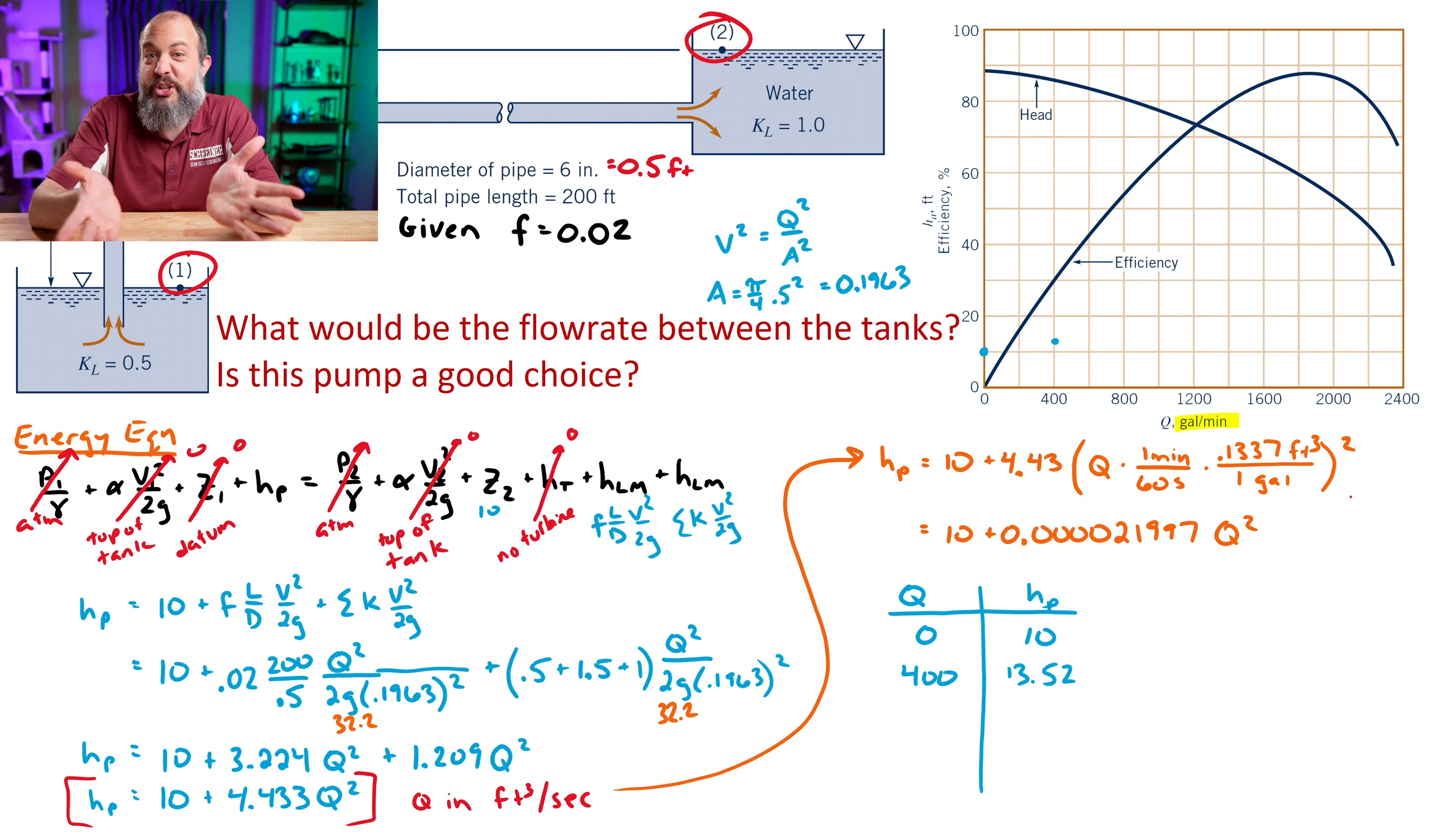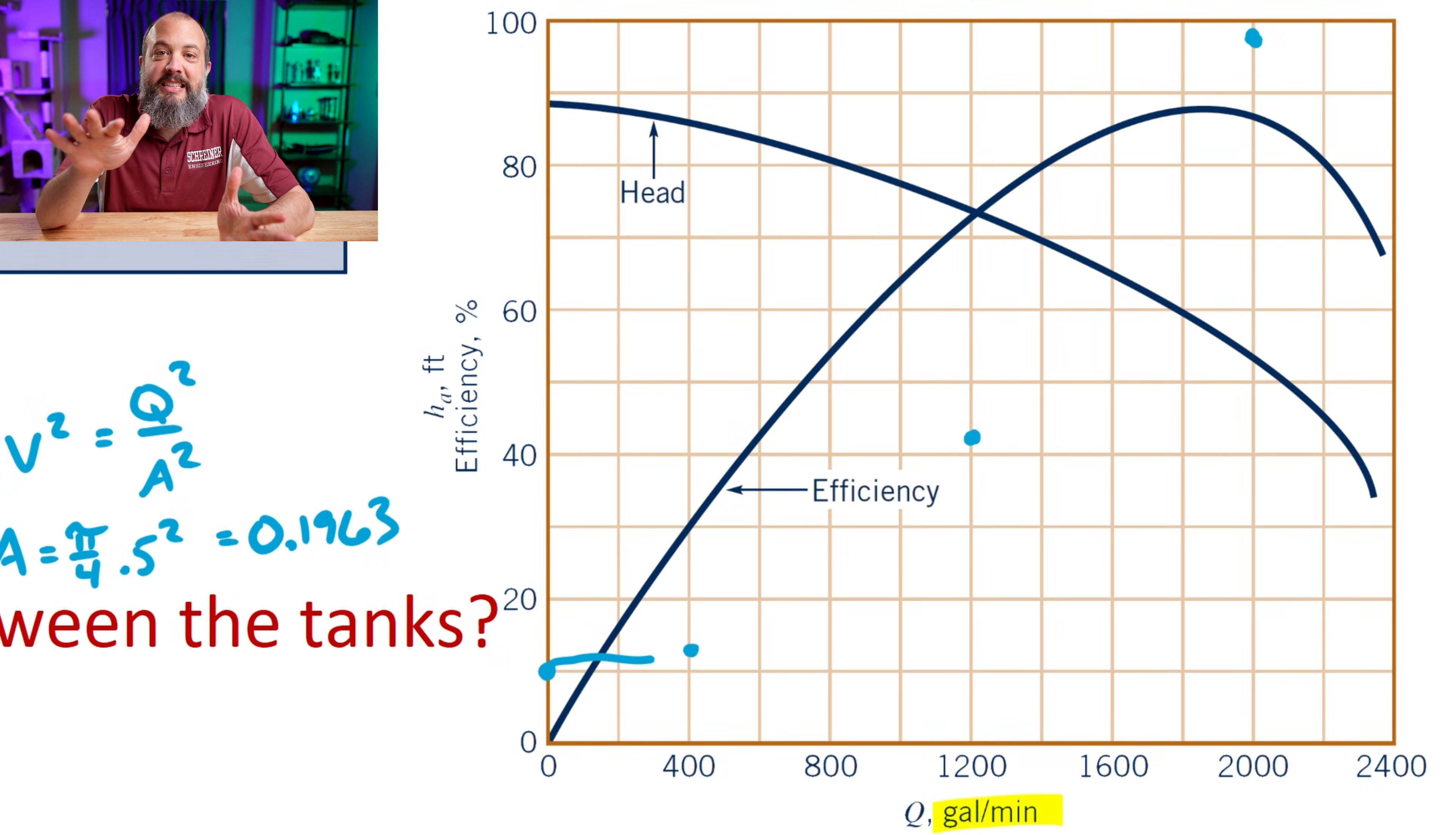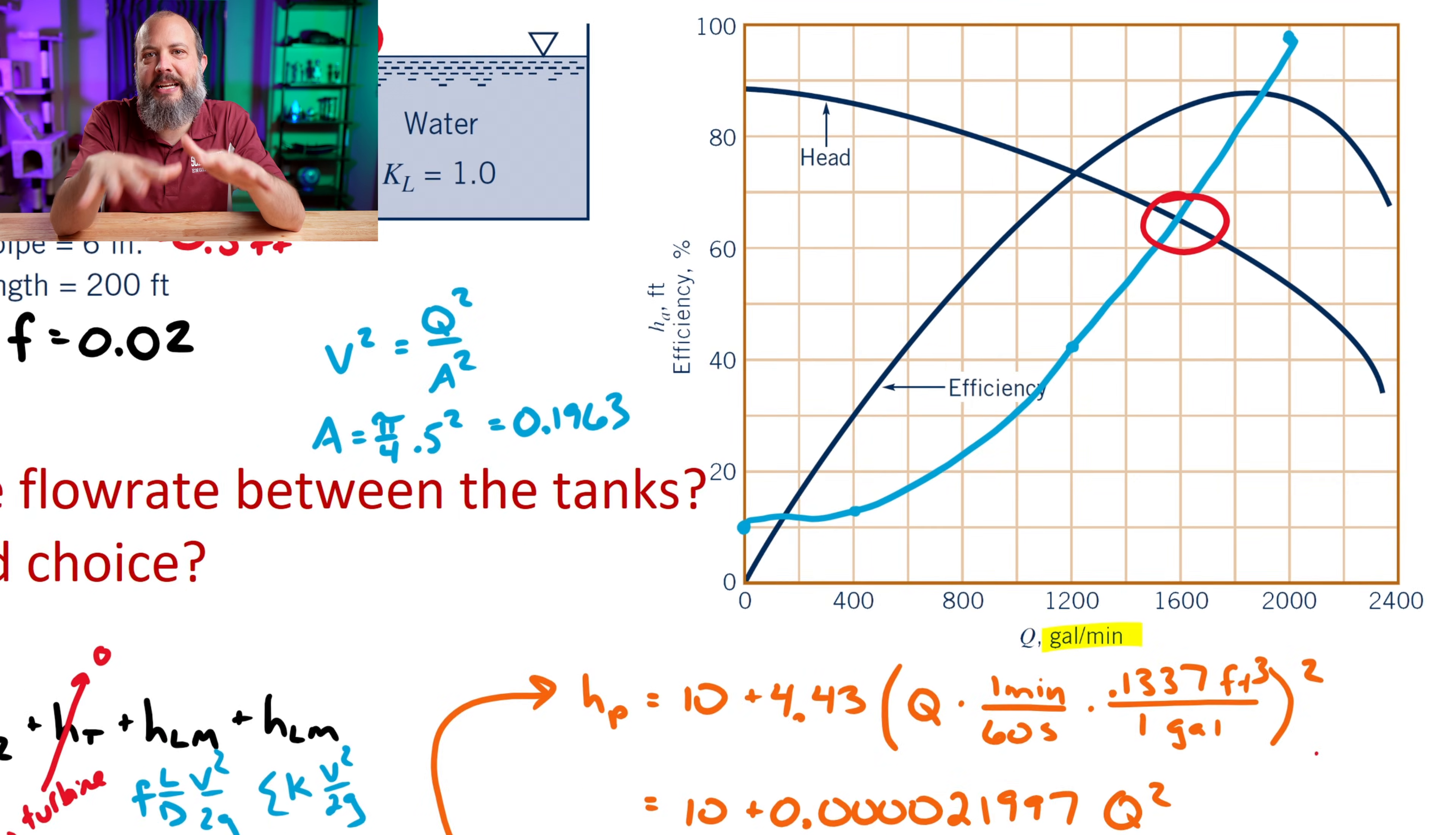Q is just going to equal 10 at a flow rate of 0. Flow rate of 400 gives us 13.52 head loss. At 1,200 gallons per minute, we've got about 41 units of head loss that the pump is going to have to provide. And at 2,000 gallons per minute, we're up around 98 feet of head loss. So as I plot that curve, it looks like our system curve intersects the pump curve right at like 1,600 gallons per minute.